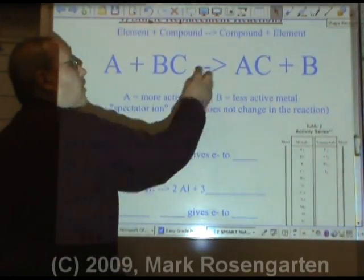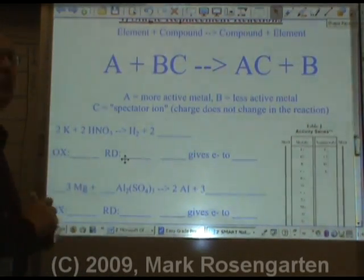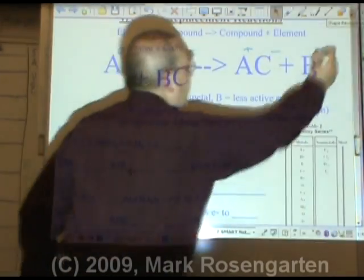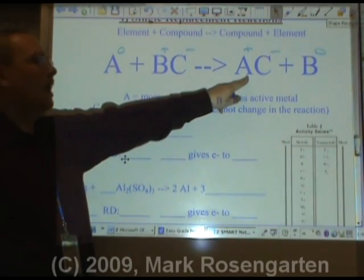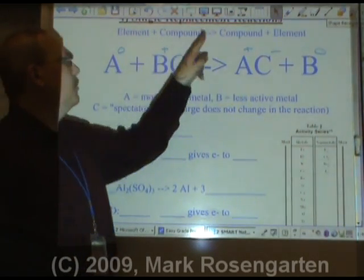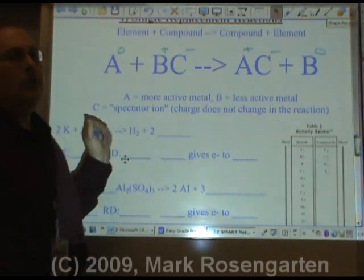C doesn't do anything. It's called the spectator ion. Here's why. A becomes more positive in charge, it's oxidized. B becomes more negative in charge, it's reduced.